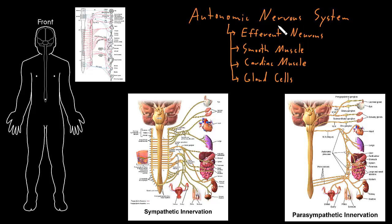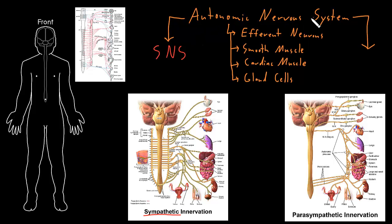We divide the autonomic nervous system into two big subsystems. The first is the sympathetic nervous system, which I'll abbreviate as SS. The other big part is the parasympathetic nervous system, which I'll abbreviate as PS.